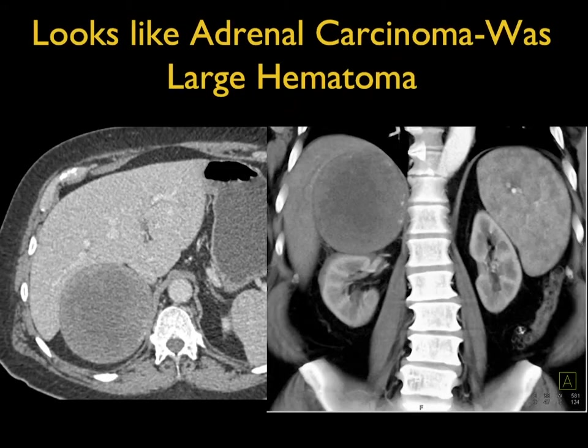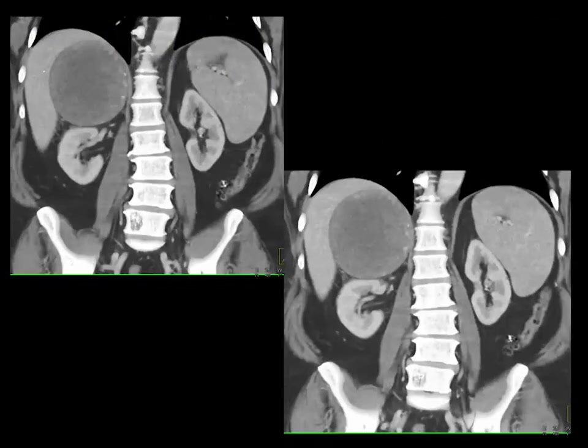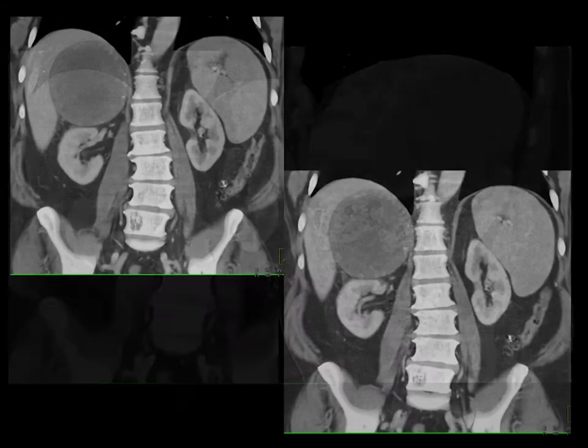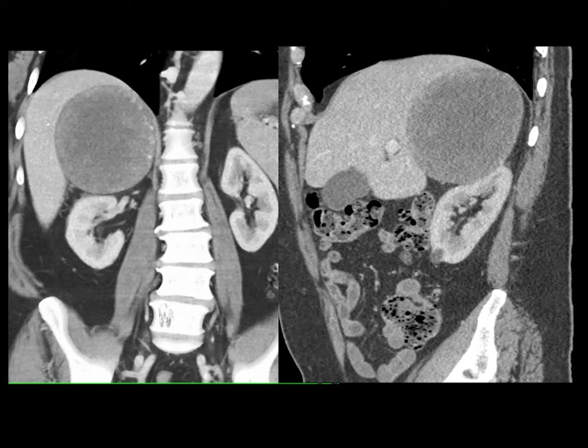Where mistakes happen: a large right adrenal mass with differential density between periphery and center, possibly calcifications — you have to admit this could be a carcinoma. But this was actually an old hematoma. I've seen many cases of old hematomas that are really large and can indeed simulate malignancy.